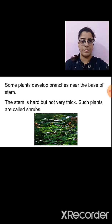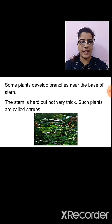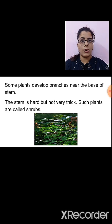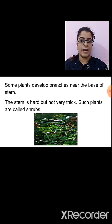Now let us see what are shrubs. Some plants develop branches near the base of the stem. In shrubs, the branching starts near the base of the stem and the stem is hard but not very thick. Such plants are known as shrubs. In herbs, the stem was tender and green in color, and branches may or may not be present. But in shrubs, the branches develop near the base of the stem. Examples of shrubs are rose or tulsi.